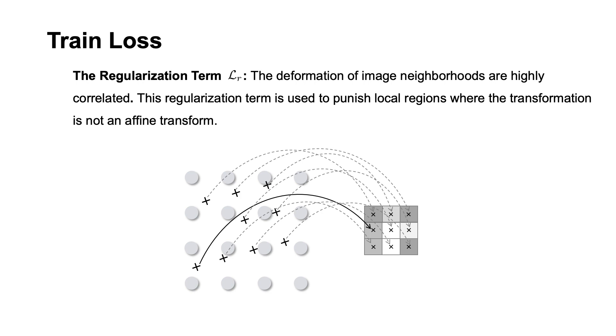As the deformation of image neighborhoods are highly correlated, we use the regularization term to extract these correlations. This loss assumes the deformation of a local region can be modeled by an affine transformation. Therefore, it punishes the local regions where the transformation is not an affine transformation. A simple example is shown in the figure. The non-affine transformation will be punished until the network predicts the correct deformation.